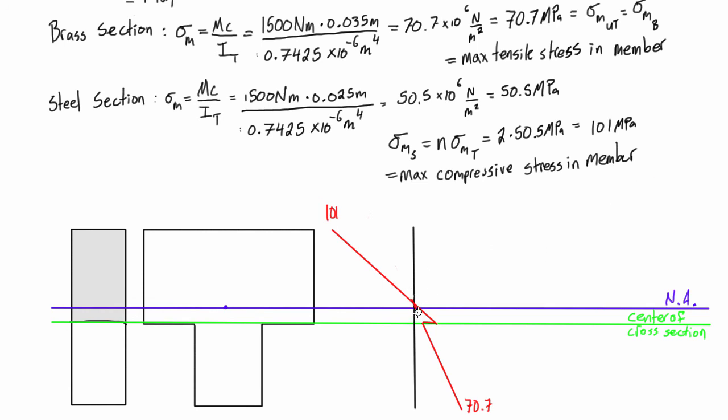So, this is the real stress distribution. You can see it's increasing at this two times rate while we're in the steel section, and then while we're in the brass section, it's increasing at the original rate that we would have calculated for the modulus of elasticity of brass.